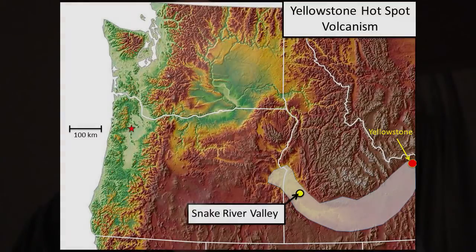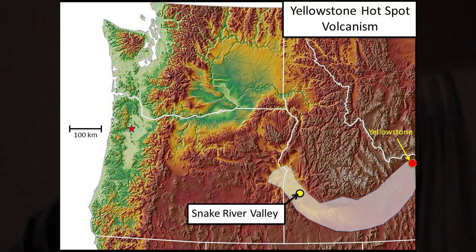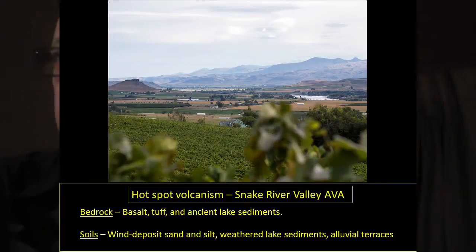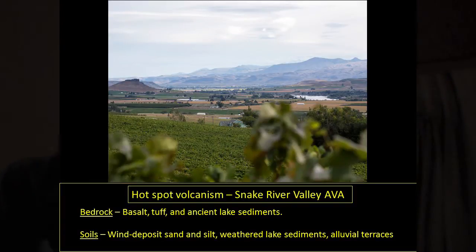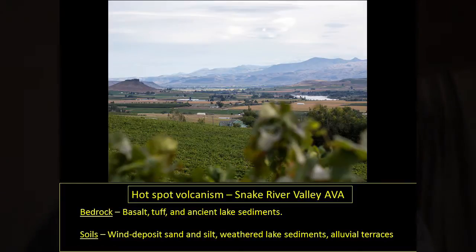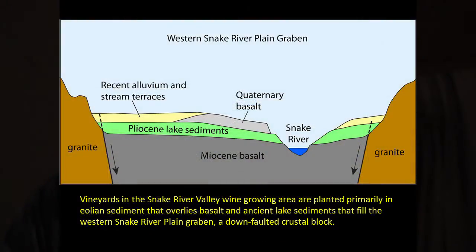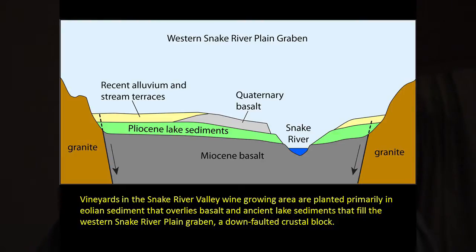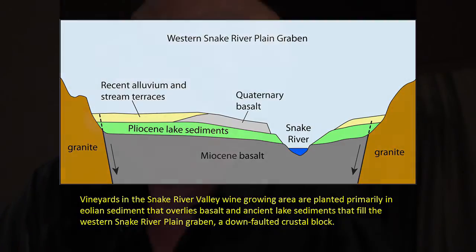The Snake River Valley is over in Idaho — a broad, flat-floored basin with volcanic rocks and the Snake River meandering through it. The bedrock consists of basalt of different ages, tuffs erupted from rhyolitic volcanic centers, and ancient Pliocene lake sediments. The AVA boundary is determined by the old shoreline of glacial Lake Idaho. The soils are wind-deposited sand and silt overlying lake sediments and alluvial terraces, sitting atop a large down-dropped crustal block full of volcanic rock.